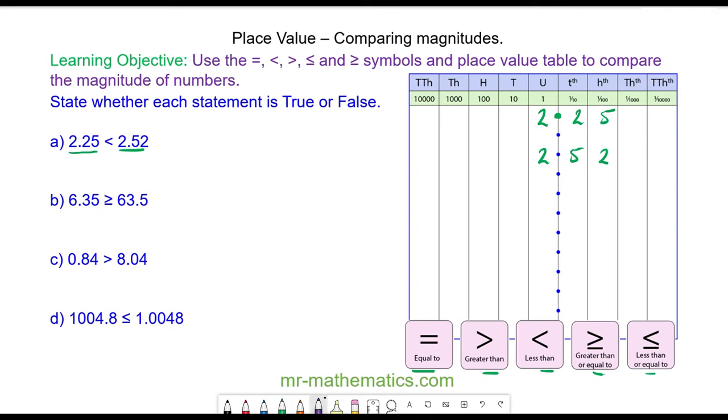You can see the units are the same, however 2.52 has three more tenths than 2.25. Because this column has a bigger value we do not need the hundreds column. 2.25 is less than 2.52.